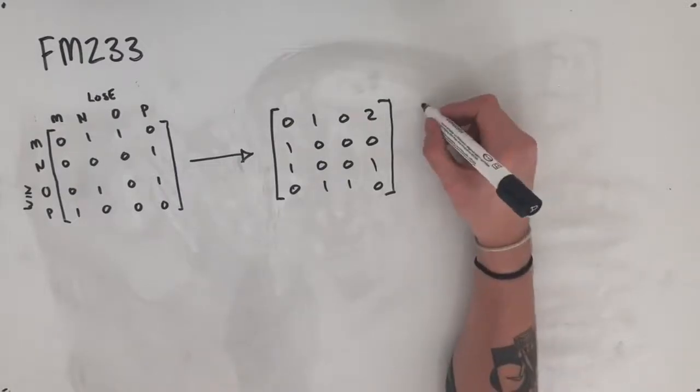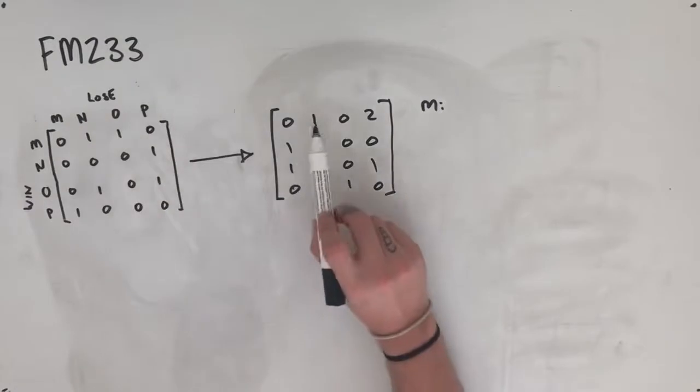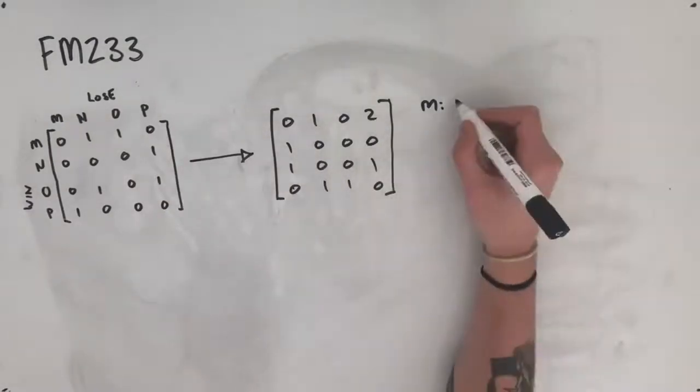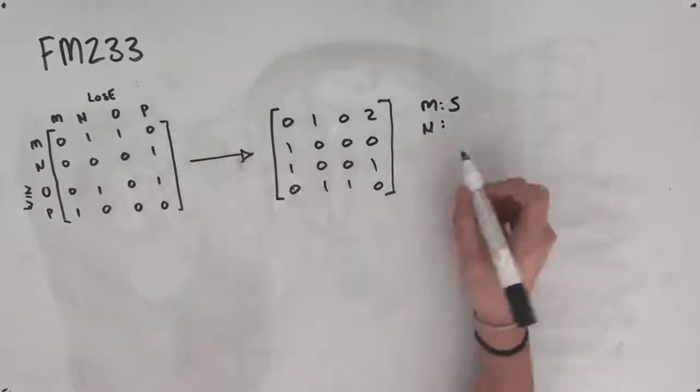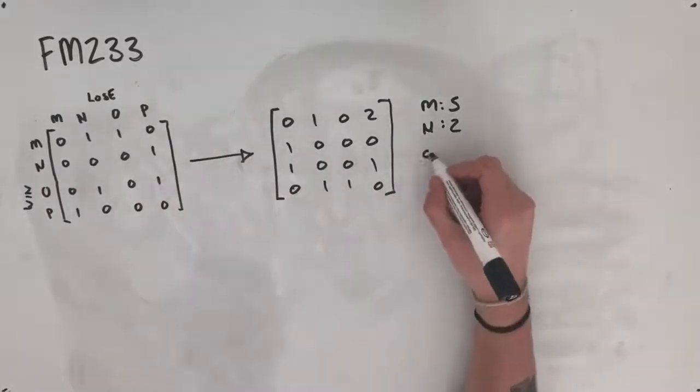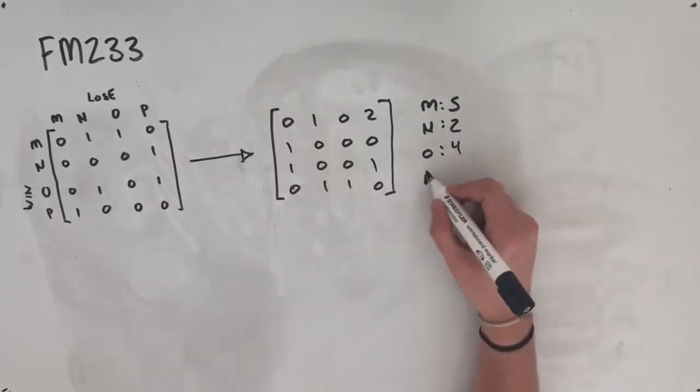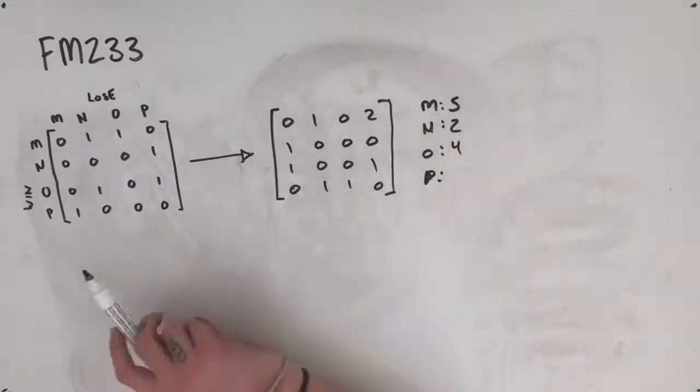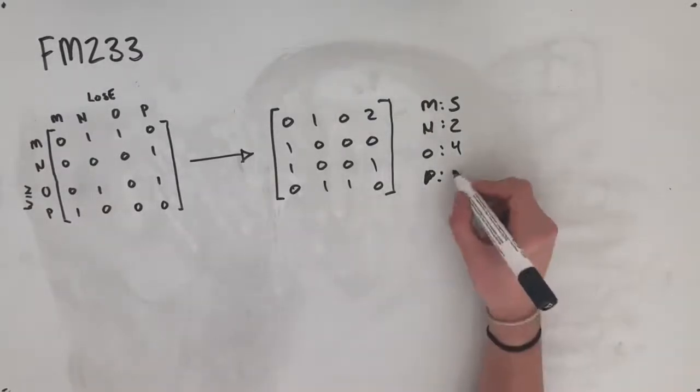Going off of this, M is going to have a total score of 1, 2, 3, 4, 5. N is going to have a total score of 1, 2, 2. O will have a total score of 1, 2, 3, 4. And P, terrible P, but P will have a final score of 1, 2, 3.